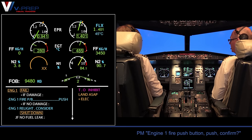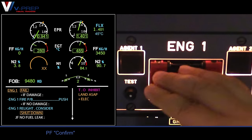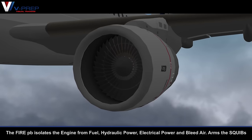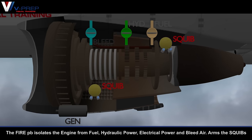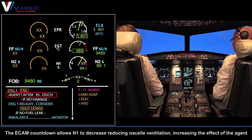Engine 1 fire push button: Push — Confirmed. The fire push button isolates the engine from fuel, hydraulic power, electrical power, and bleed air, and arms the squibs. The ECAM countdown allows N1 to decrease, reducing nacelle ventilation and increasing the effect of the agent.